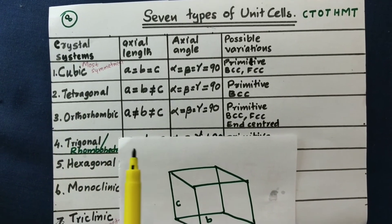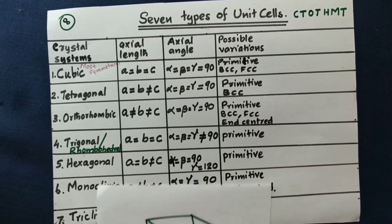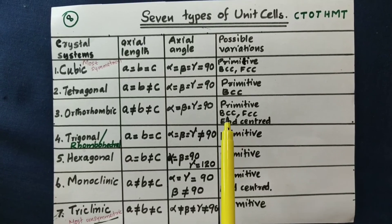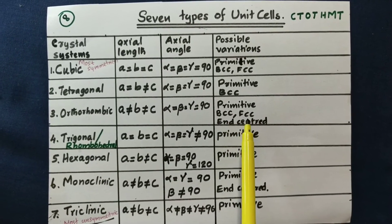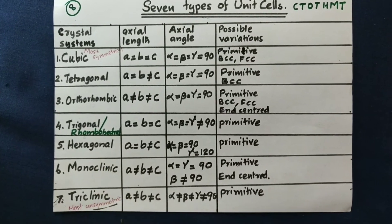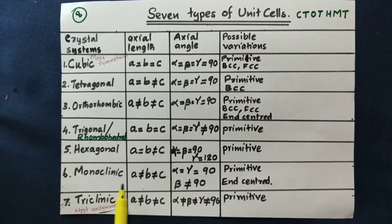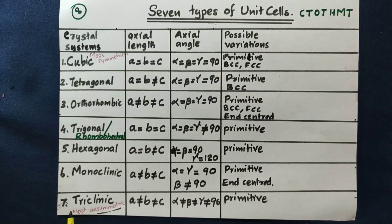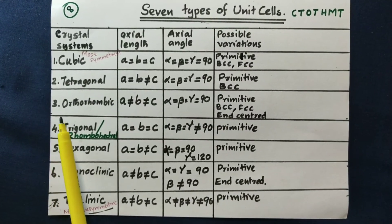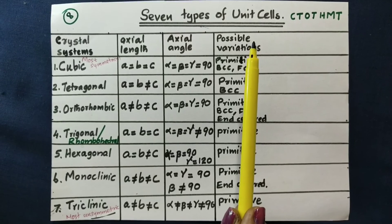Trigonal and hexagonal systems have only primitive cells. Monoclinic has four types: primitive, BCC, FCC, etc. Triclinic has only primitive cells. Monoclinic has primitive cells. There are seven types of unit cells with different variations.